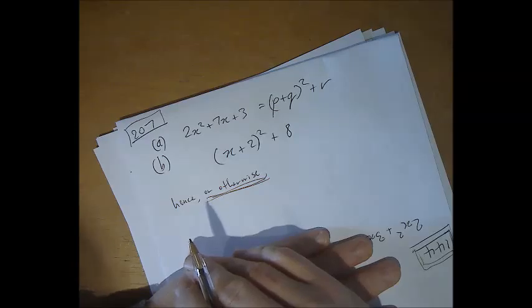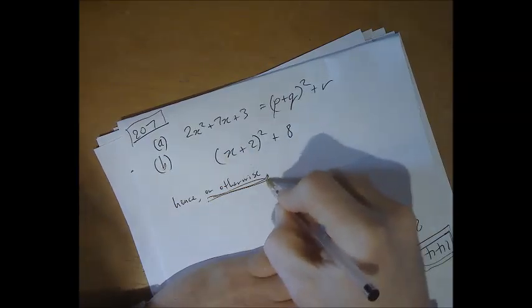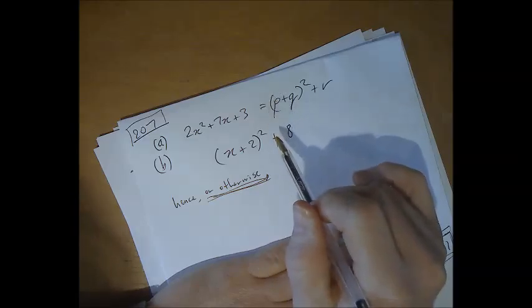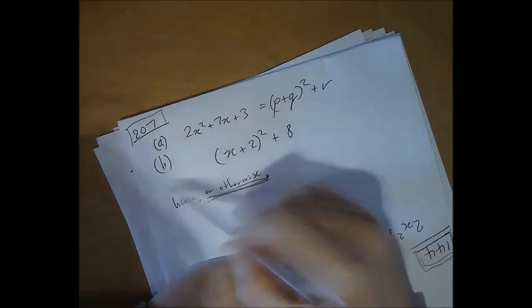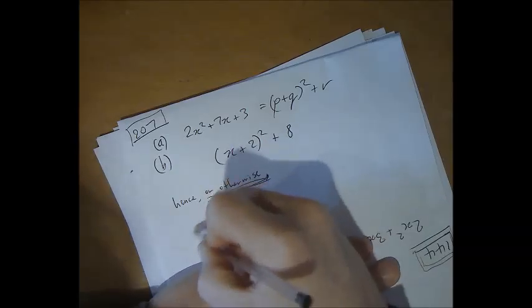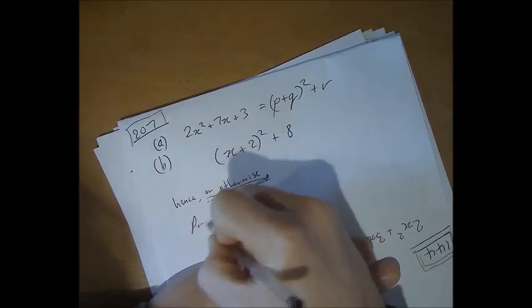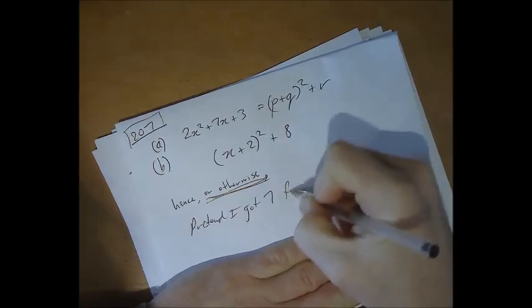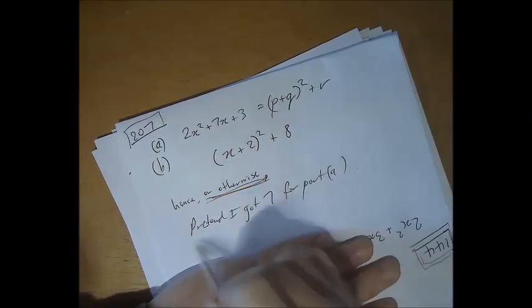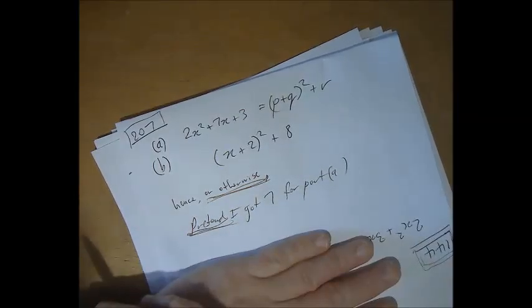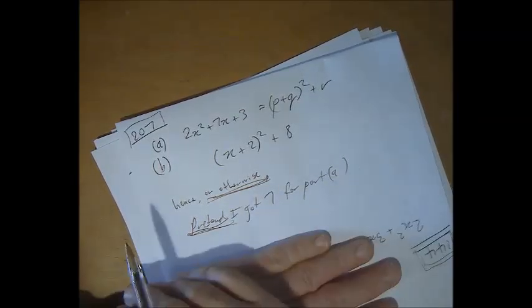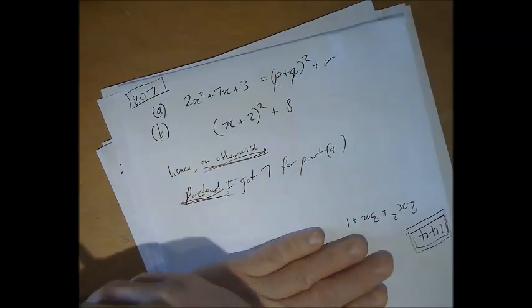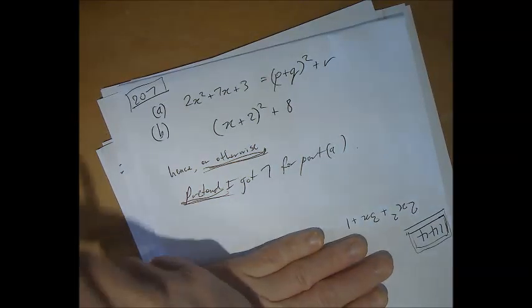And for goodness sake, if you haven't succeeded in cracking part A, but you need a value from part A for part B, just literally write 'pretend I got 7 for part A.' And then work with part B, and then you'll at least get all the marks available for part B.